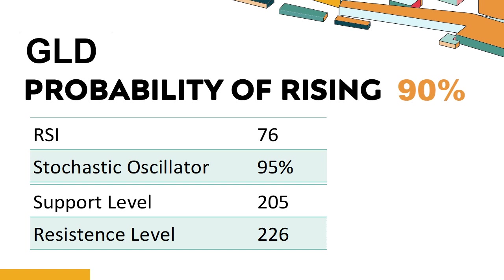The probability of GLD share price rising is 90%. When the probability of rising is higher than 50%, it means that the stock has a higher chance of rising. If the probability of rising is lower than 50%, it means that the probability of falling is high. Combining multiple technical analysis indicators, GLD has four bullish signals and three bearish signals.